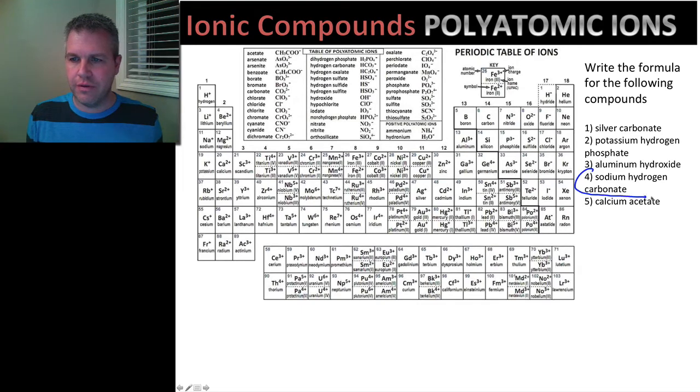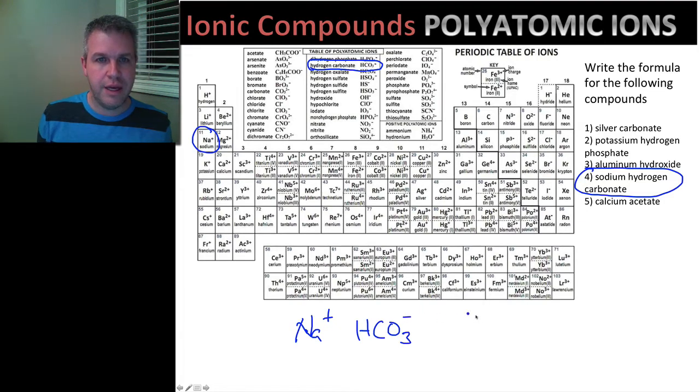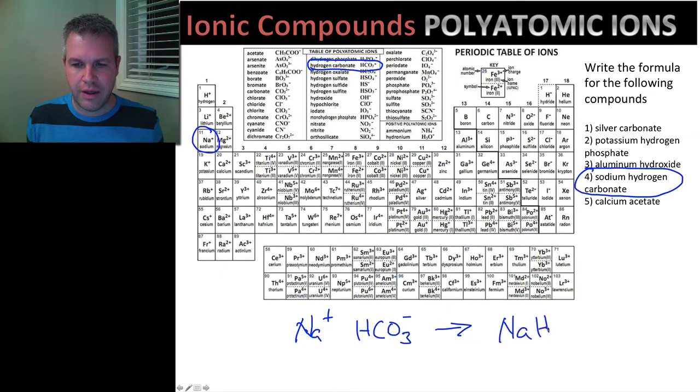Okay, here's our fourth one. Sodium hydrogen carbonate. So sodium is here. Hydrogen carbonate is right up here. And our charge on sodium, Na positive 1. And here it's HCO3 negative. So our charges are going to balance out. That gives us NaHCO3. And then we're finished with that one. That one worked out quite nicely.